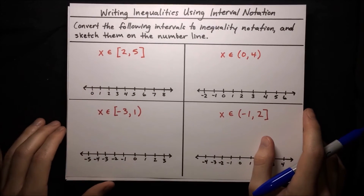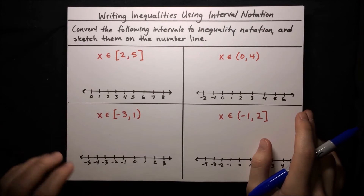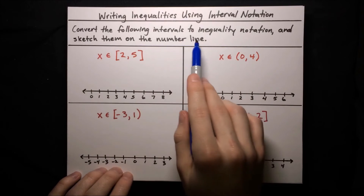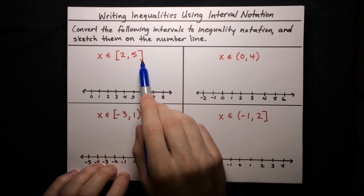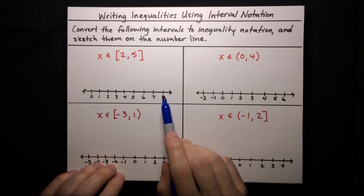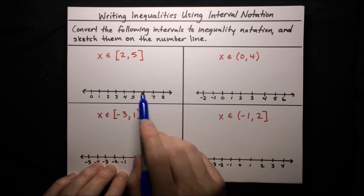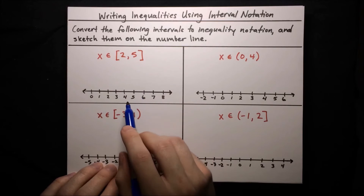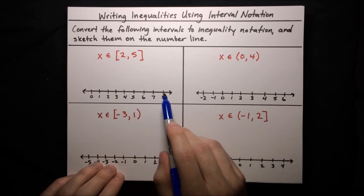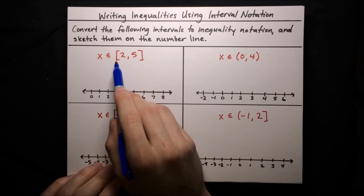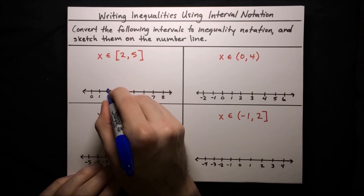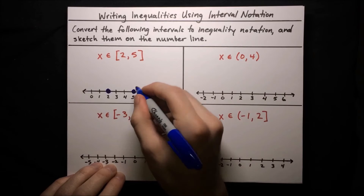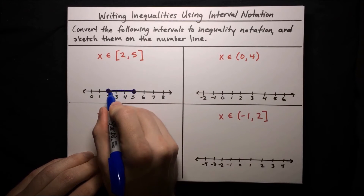The next example goes in the reverse direction — we want to convert intervals to inequality notation and sketch them on the number line. Starting with x ∈ [2, 5]: brackets correspond to closed circles, so we draw a closed circle at 2 and a closed circle at 5, then shade everything in between.